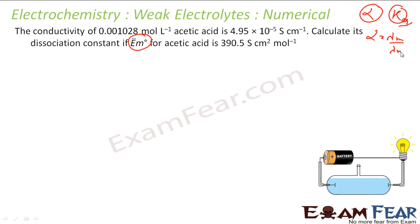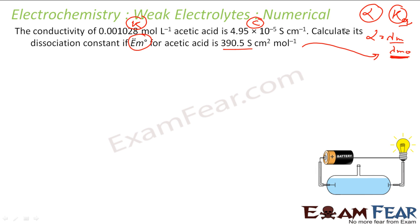To find K (the equilibrium constant) I first need alpha (α). Alpha is λM divided by λM⁰ — where λM⁰ is at infinite dilution and λM is at the given concentration. Since λM⁰ is given, I need to find λM at this concentration. The conductivity κ and concentration C are both given, so λM = κ / C.